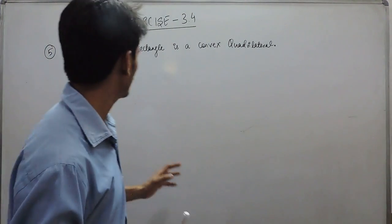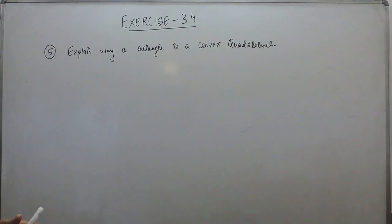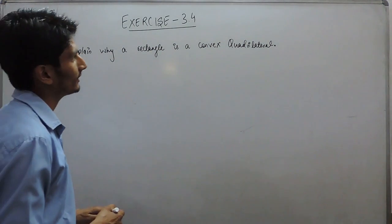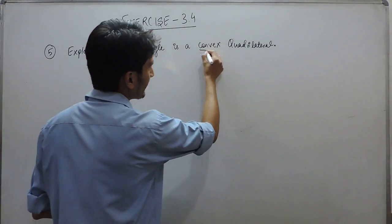Hello everyone, in this video we're going to solve question number 5. We have to explain why a rectangle is a convex quadrilateral.